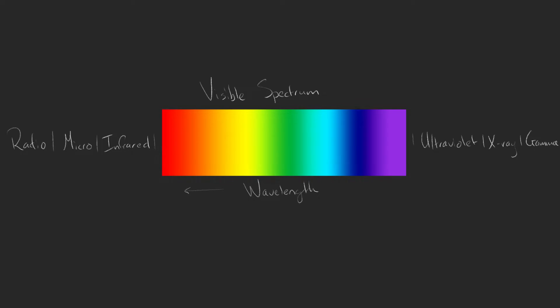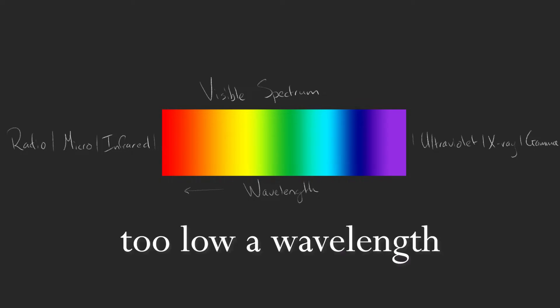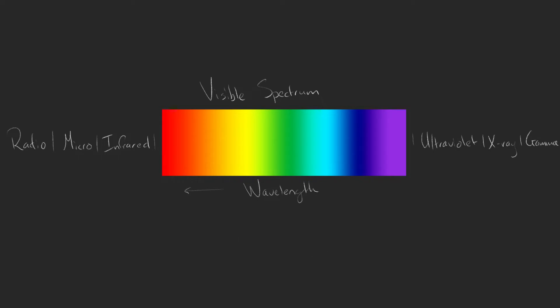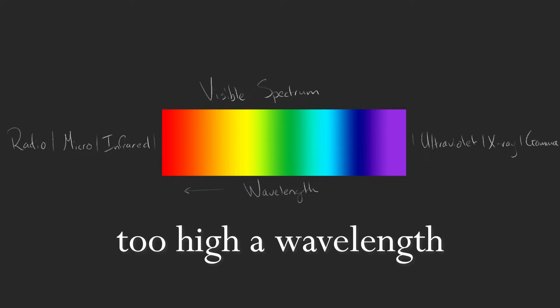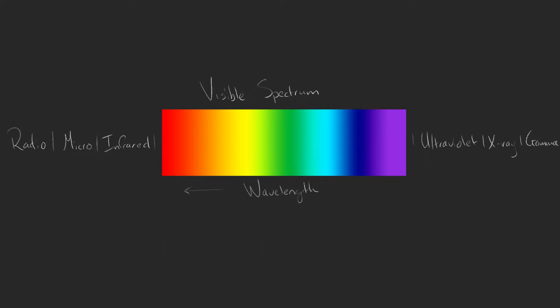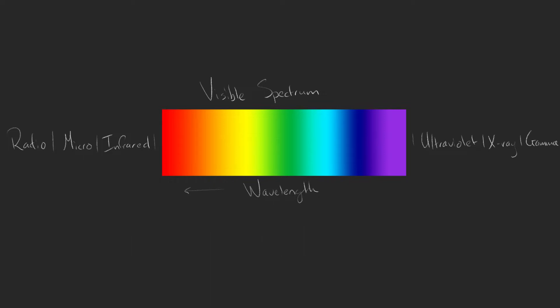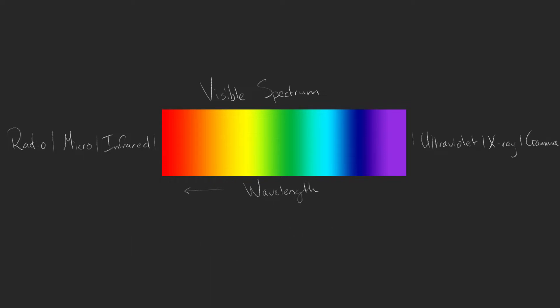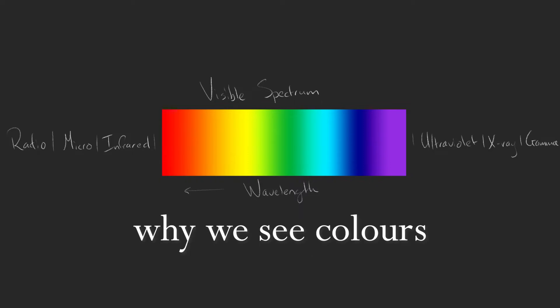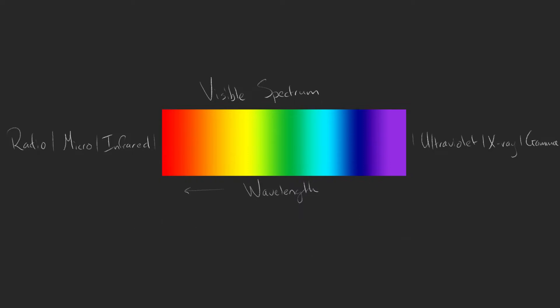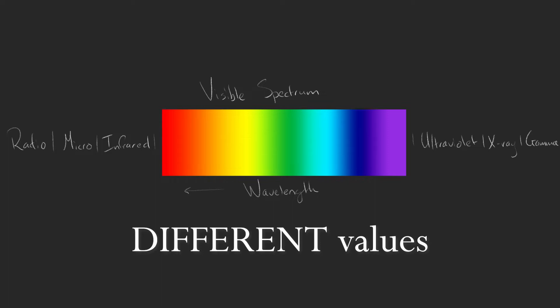Radio waves, microwaves, and infrared waves have too low a wavelength for our eyes to detect, while ultraviolet rays, x-rays, and gamma rays have too high a wavelength. But most importantly, we don't detect all wavelengths in the visible spectrum equally. And this is why we see colours with the same brightness and saturation as having different values.